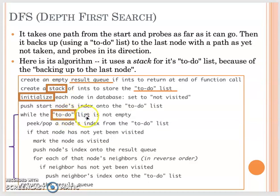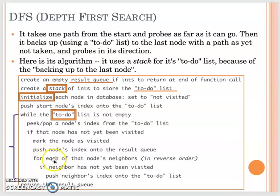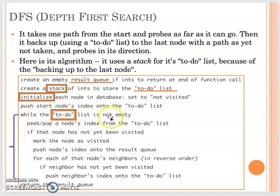As long as the stack is not empty, we continue. We pop the node index from the to-do list. Then, same as before, if this node has not been visited yet, we mark it visited and push this node index into the result. Then for all its neighbors, if the neighbor has not been visited yet, we push them into the to-do stack. This continues until all neighbors are processed and pushed to the to-do, so while the to-do is not empty we keep continuing the recursion.